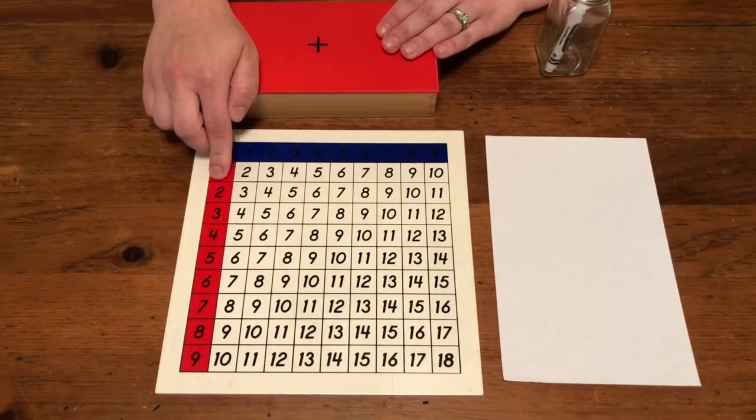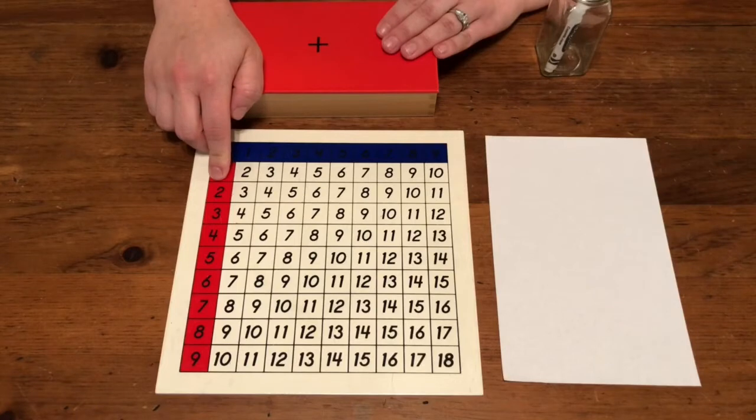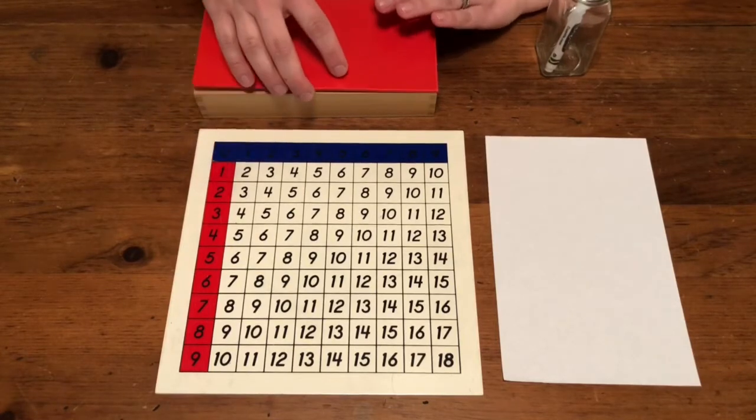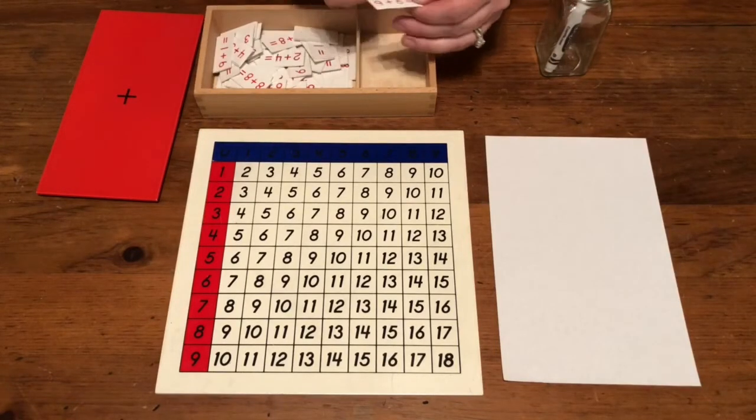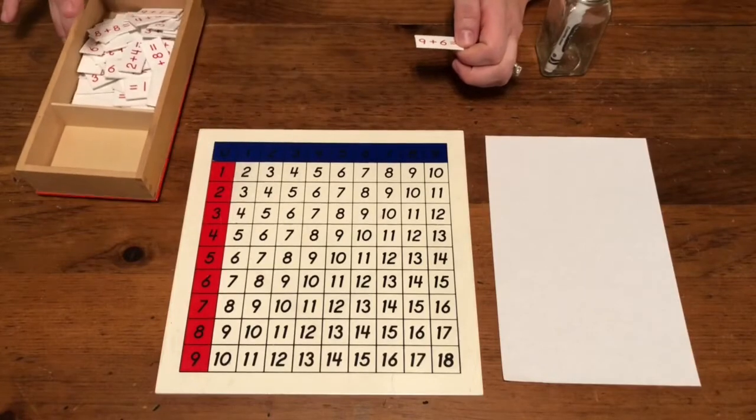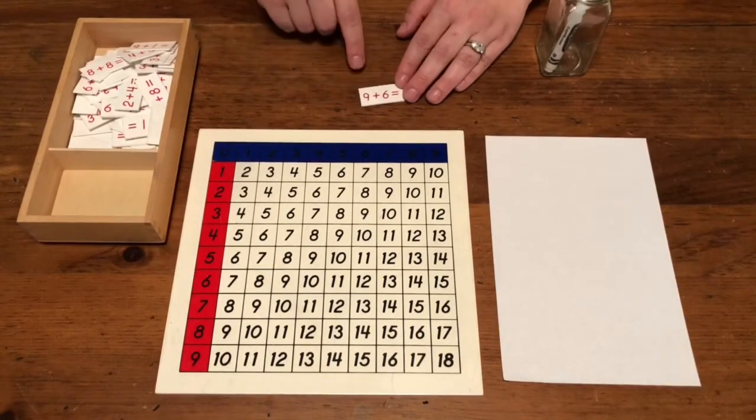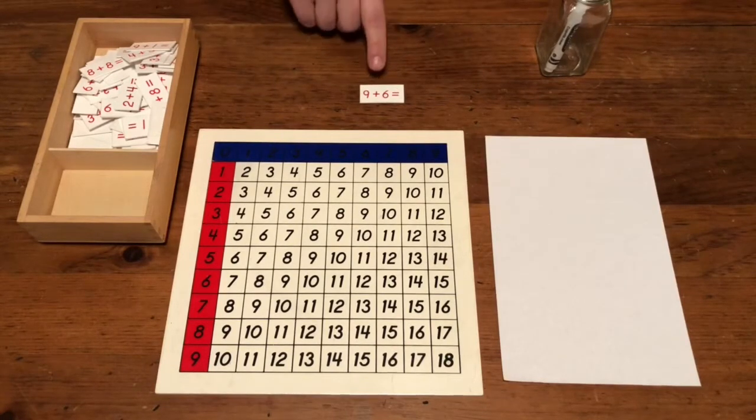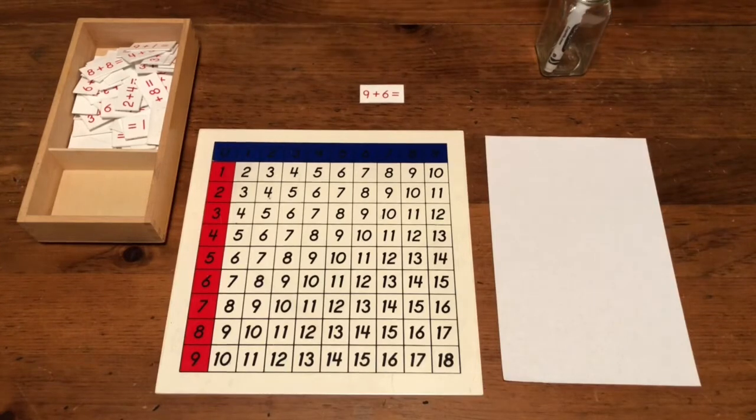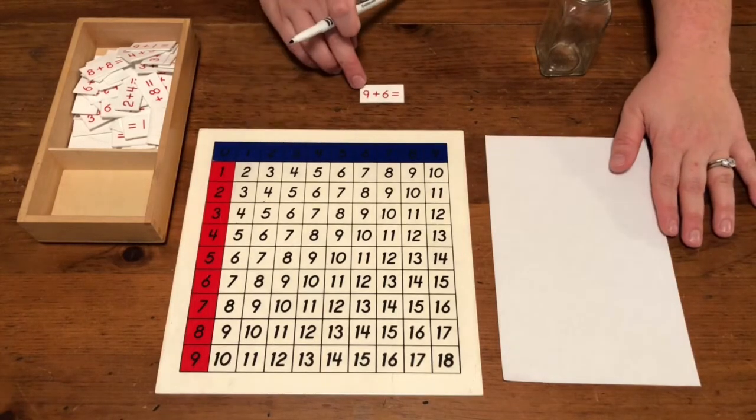I have our addition touch board or the addition fingerboard that we have from school. I sent you a copy that you can print out. At school we have cards or tickets that give you an equation, but since you don't have these, you can ask someone to make up some equations for you, or I will show you some other ways to come up with equations. But let's do this one first.